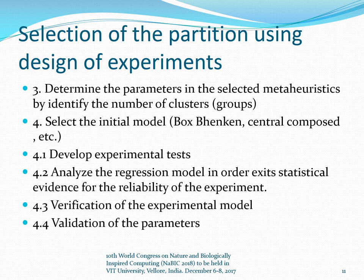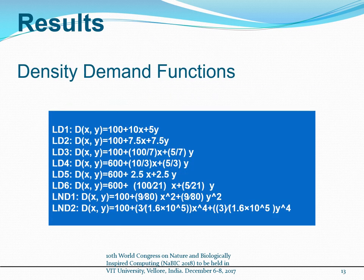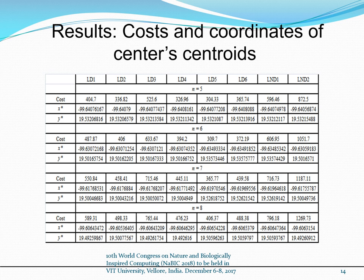In the case study, the application of this methodology used data from the Metropolitan Zone of Toluca Valley. Results: we obtained the following density demand functions after conducting the experiment. In this slide, we can see the cost and coordinates of the center centroids.